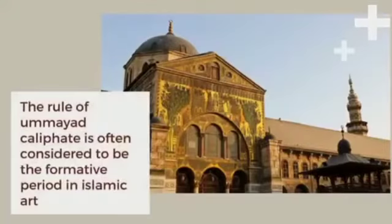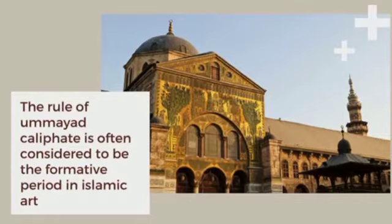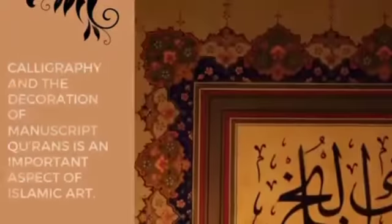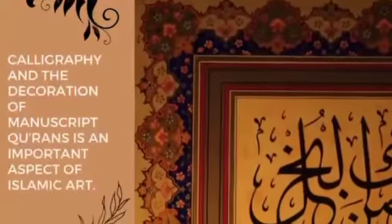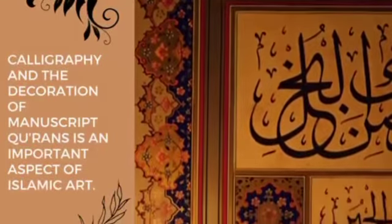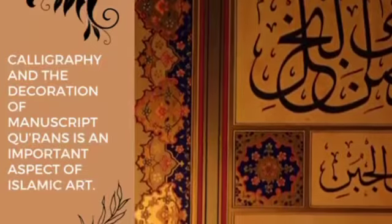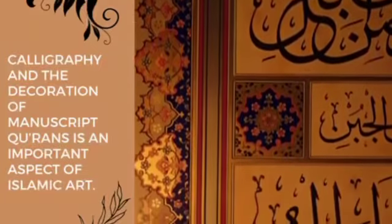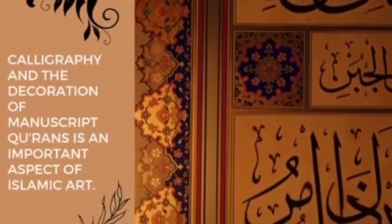The rule of the Umayyad Caliphate is often considered to be the formative period in Islamic art. Calligraphy and the decoration of manuscripts of the Quran are important aspects of Islamic art.